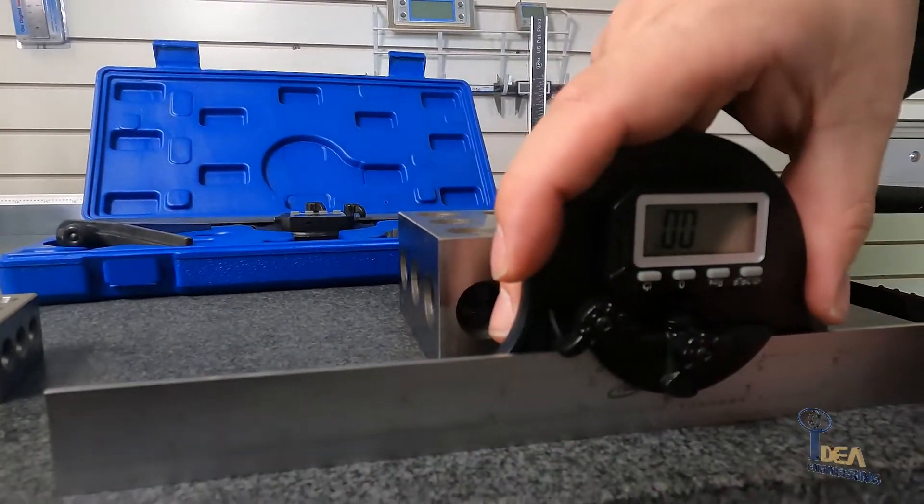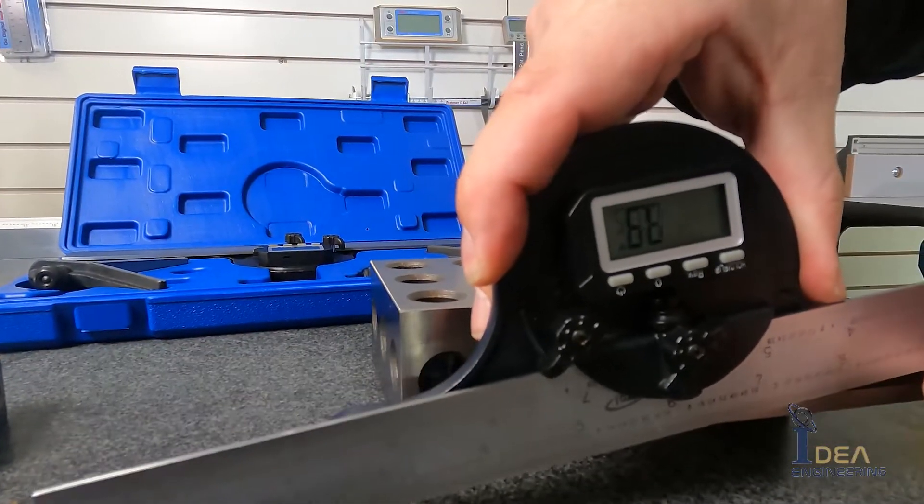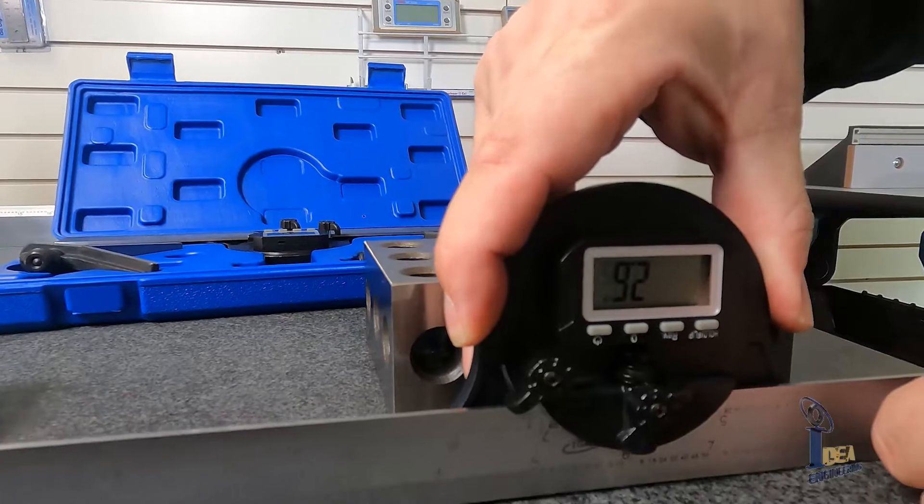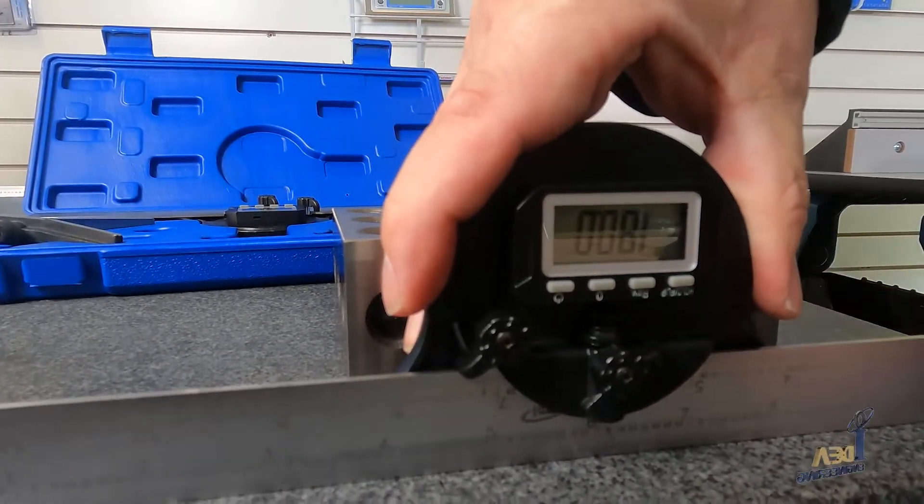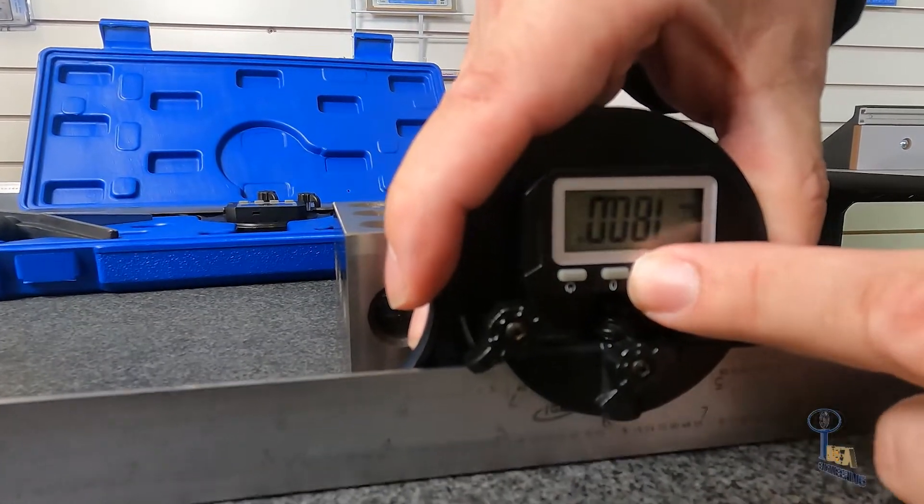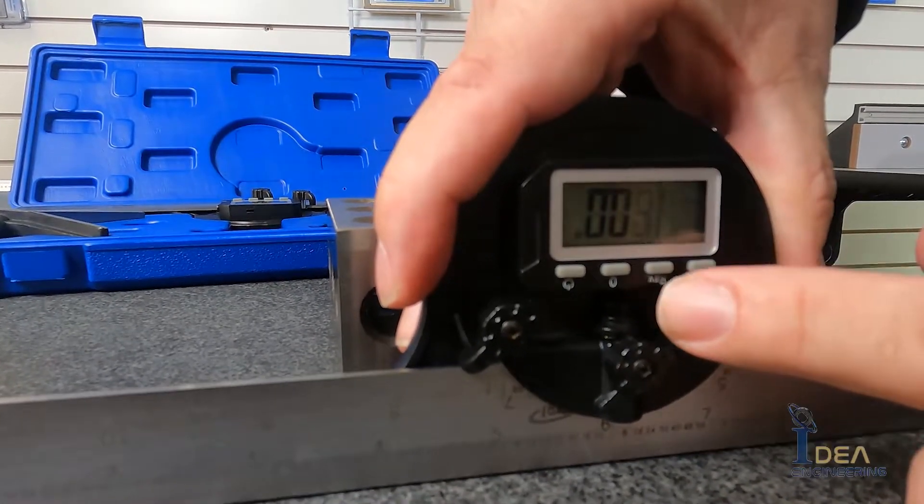And then you can loosen this and adjust it to see your angle. It also has a function that if you want to switch it 180 degrees you can do that with this. So there it shows 180 instead of zero. But we want to leave it at zero for now.